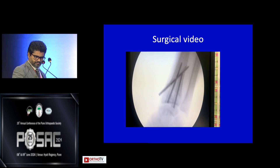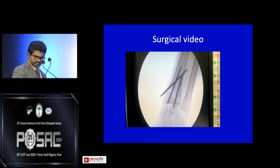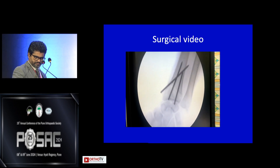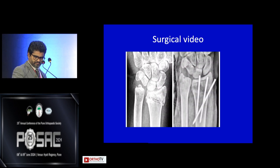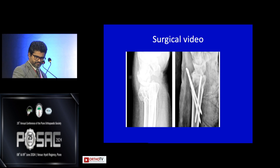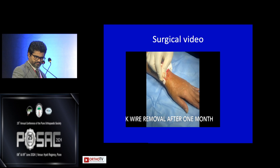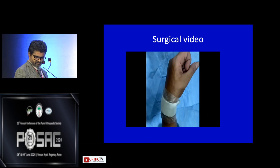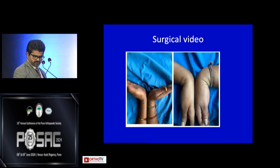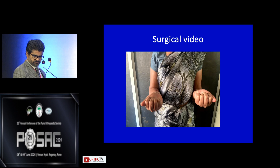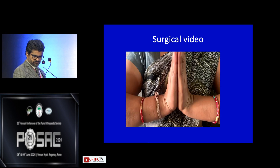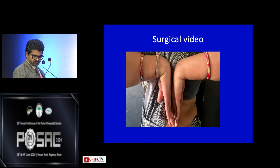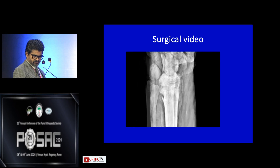Dynamic C-arm images show lateral movement with no dorsal displacement, and in AP view there is no translational displacement in the radial direction. The post-op AP and lateral views are compared to the pre-op view. The K-wires are removed after one month under local anesthesia. Active flexion and extension at one and a half months show full supination and passive wrist flexion-extension. The one-and-a-half-month post-op X-ray confirms good healing.